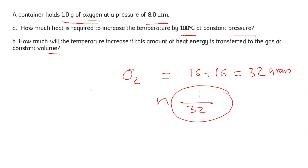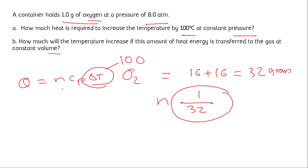We write the equation for heat: Q = nCpΔT, where ΔT equals 100 degrees Celsius as stated in the question. The number of moles has been found, and the value of Cp is given in the question. From here we can find the value of heat required to increase the temperature by 100 degrees Celsius at constant pressure. This value of Q is the same when increasing the temperature of the gas at constant volume.